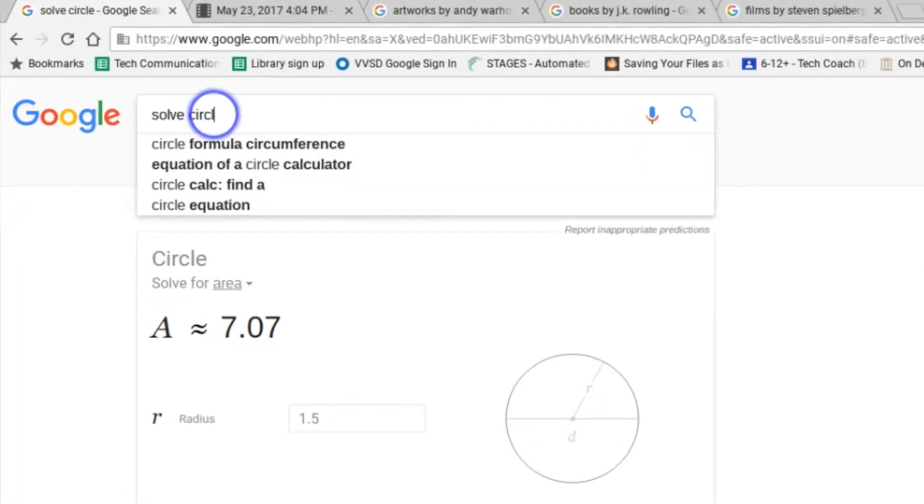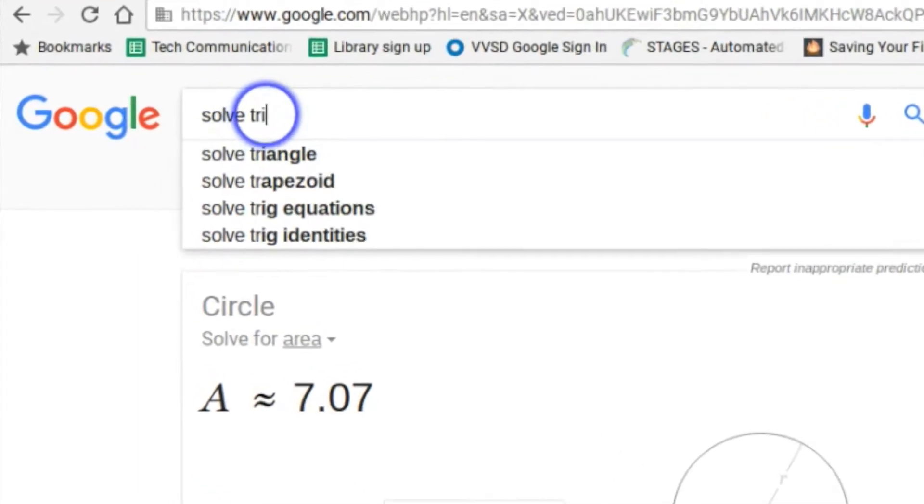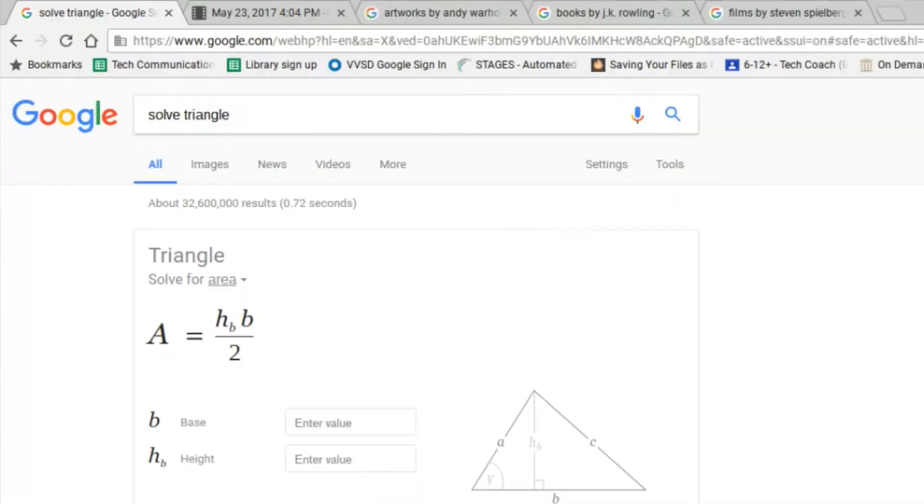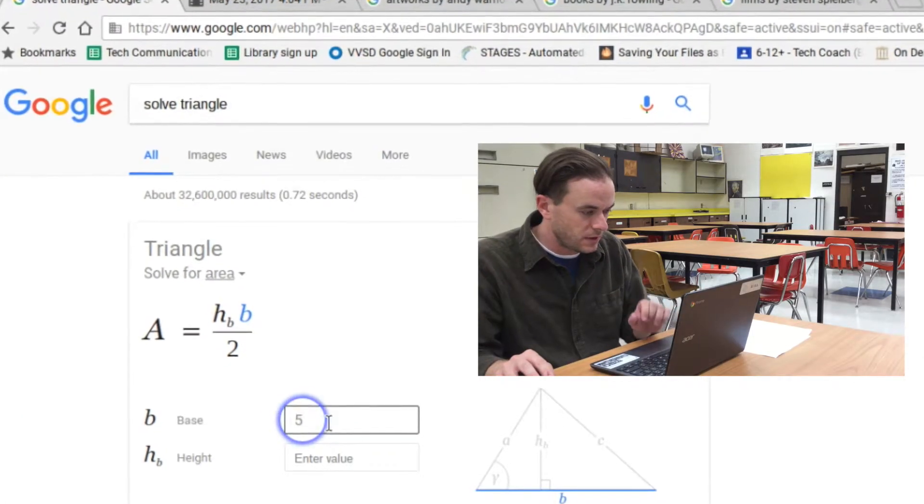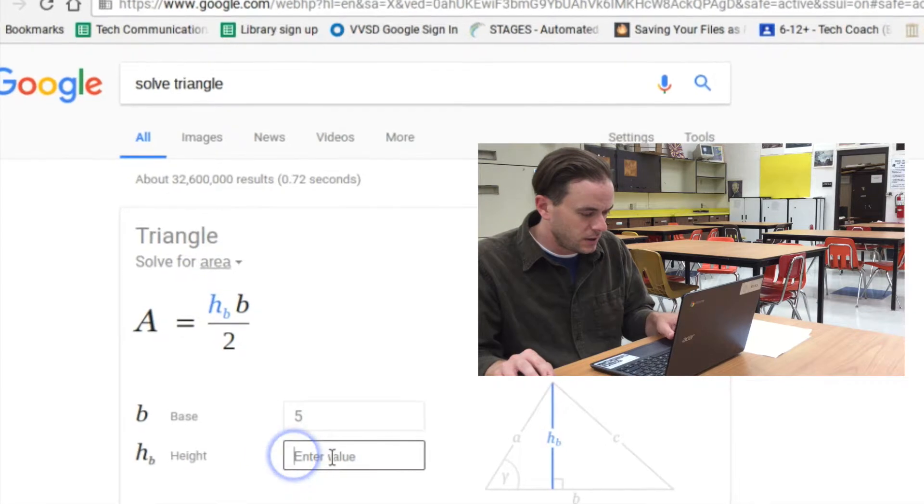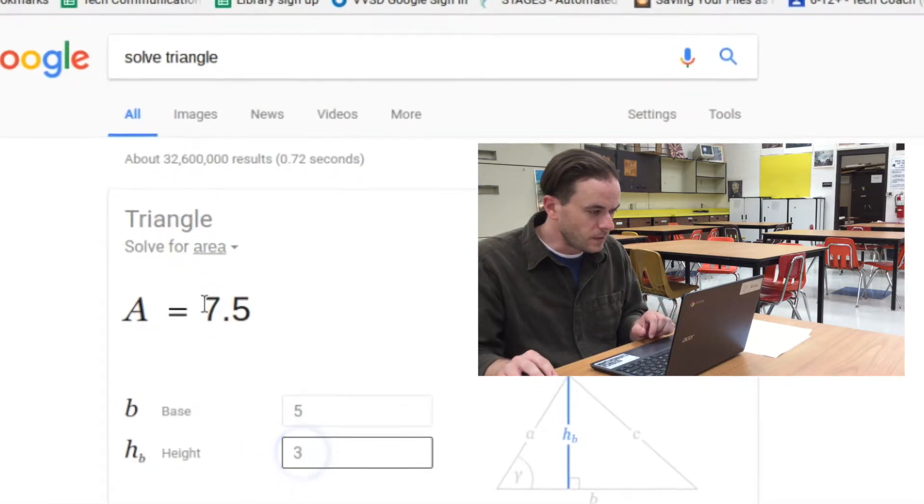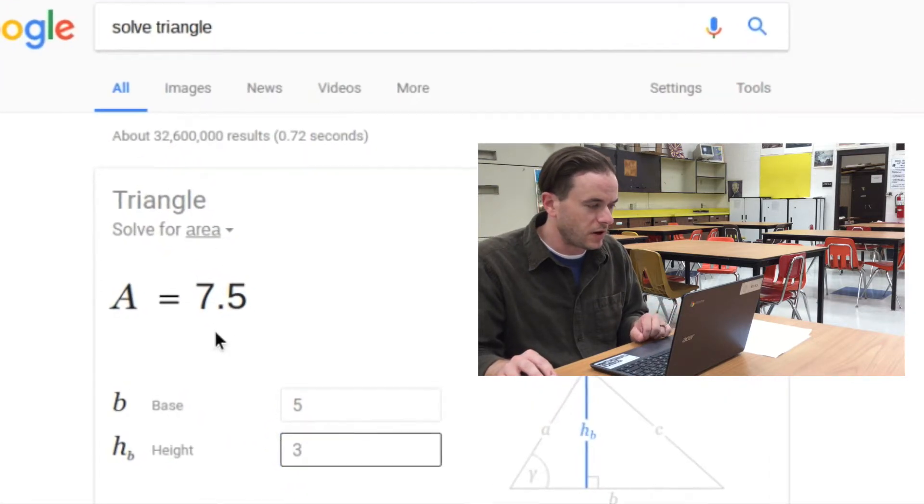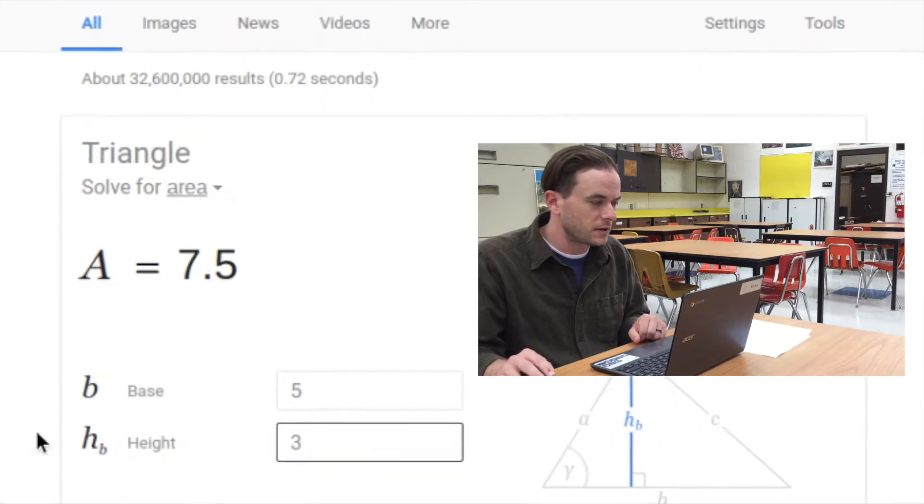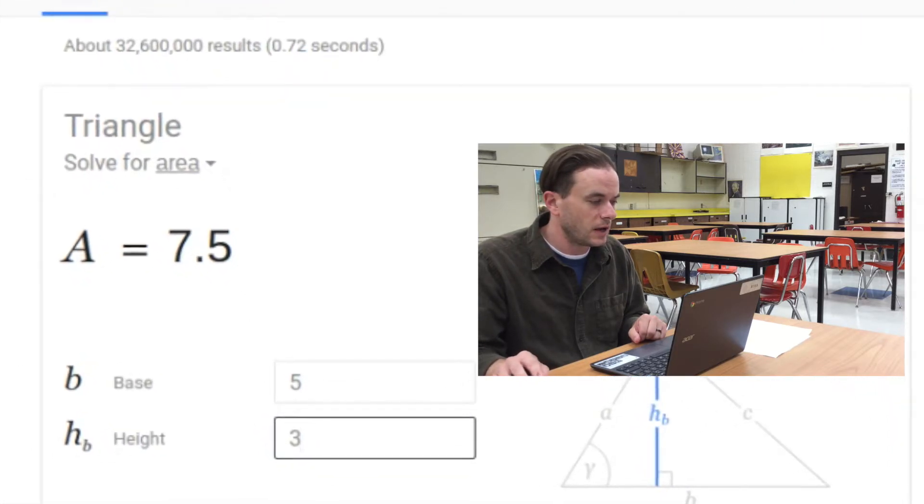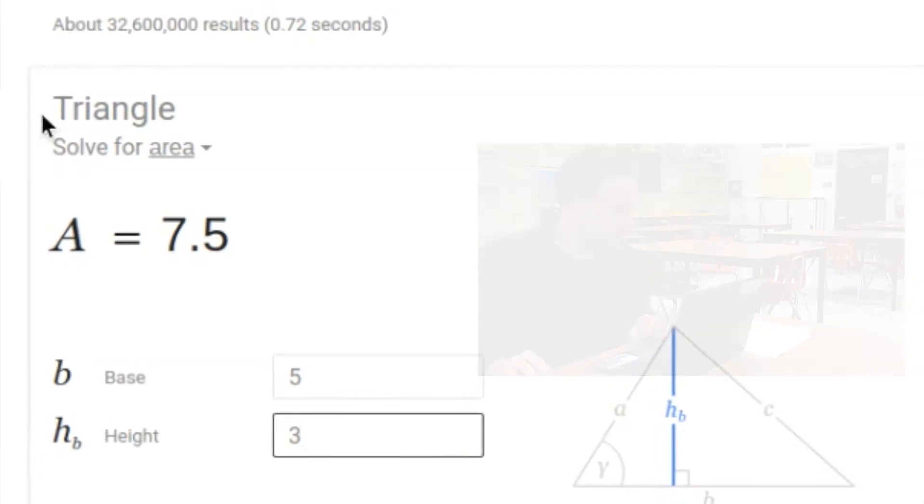This will work for any shape that you want to try. Let's put in a triangle. Brings up the same thing. So we've got to add in the base and the height values. Let's see what happens here. If we enter in a 5 there and we enter in a 3 here, then the overall area is 7.5. So very nice tools that Google provides directly through the homepage for getting the area of different shapes.